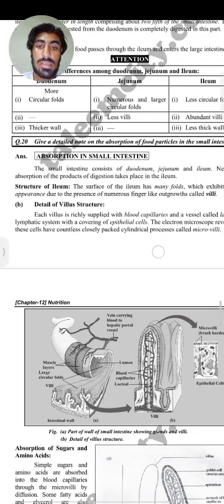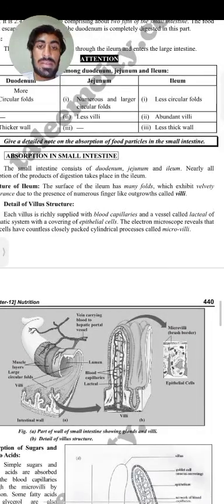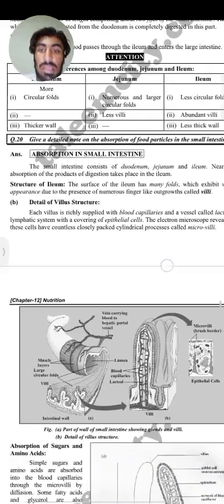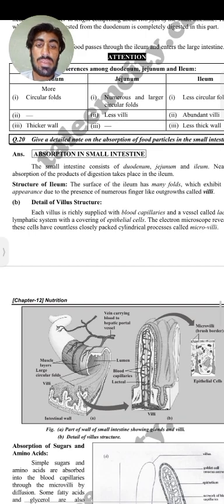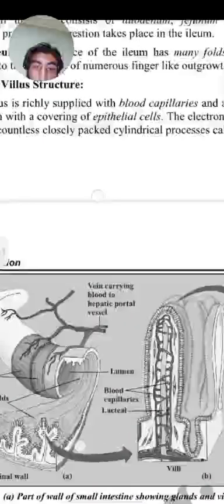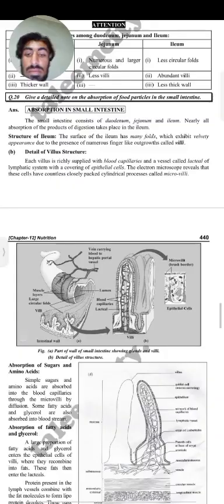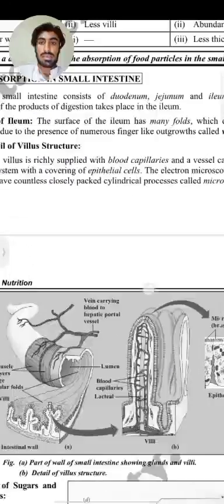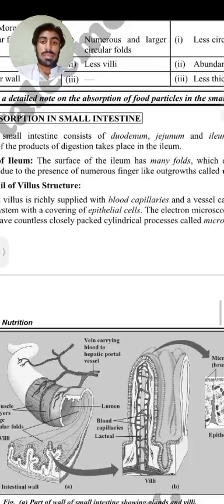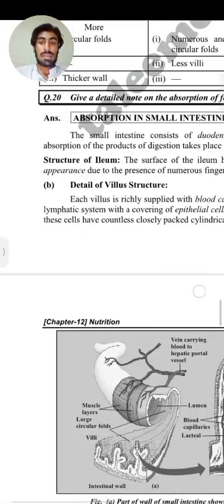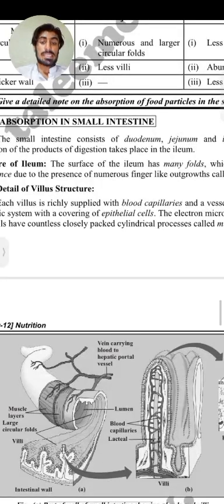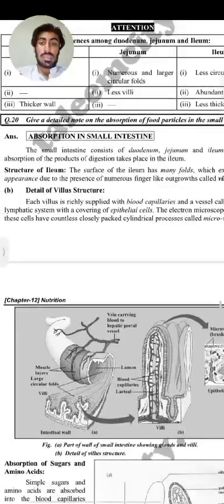The velvety appearance is due to the presence of numerous finger-like outgrowths called villi. The villi are richly supplied with blood capillaries and lymphatic vessels called lacteals, and are covered with epithelial cells.